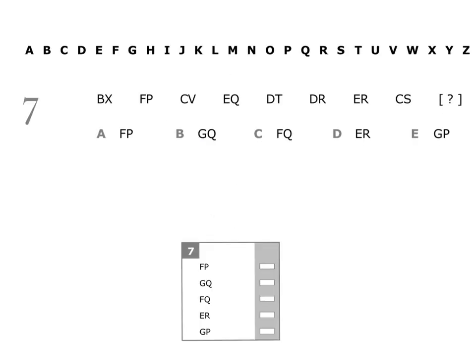Question 7. The series is: B-X, F-P, C-V, E-T, Q-D, D-R, E-C, S. We need to find the next pair of letters in the series, and we're going to start by looking at the first letter in each pair.